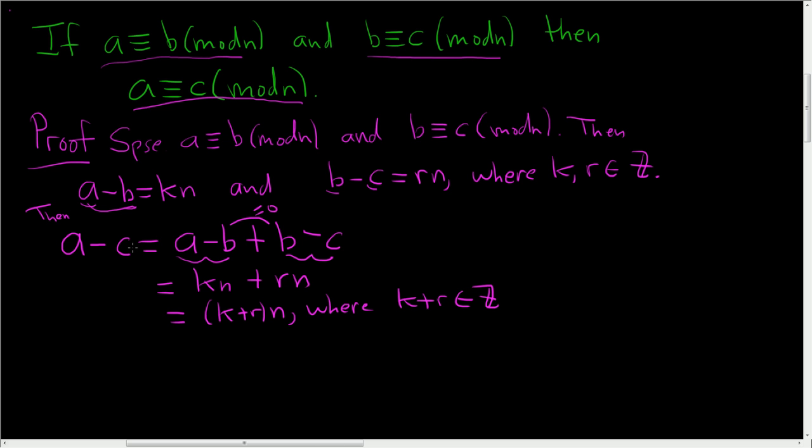So we showed that A minus C is equal to an integer times N. In other words, A minus C is a multiple of N. So this means A is indeed congruent to C modulo N. It's not a hard problem, but I think it's worth doing.